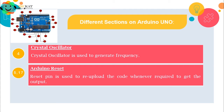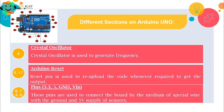Different boards have different power supplies — some have 3.3 volts, some have 5 volts. In Arduino Uno we have both supplies. In the mid section, sections 6 through 9, you will notice that section 6 provides 3.3 volts and section 7 provides 5 volts.